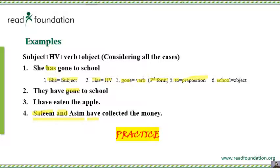Now the only thing you have to do is practice. The more sentences you make, the better. Pick a pronoun, check if it's singular or plural — use 'has' for singular, 'have' for plural — then add a verb in its third form and an object. You can send me your practice sentences on my Facebook, Instagram, blog, YouTube comments, or WhatsApp. I'll share a link to my official WhatsApp. Practice it and wherever you have an issue, you can contact me.